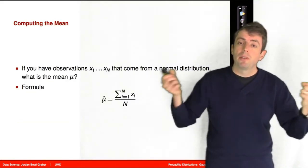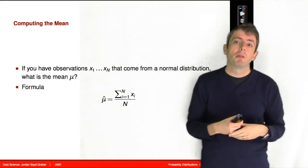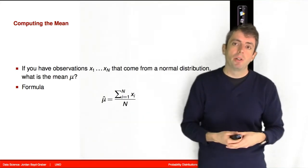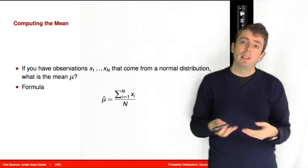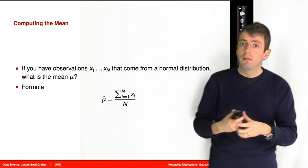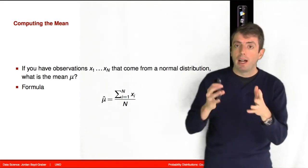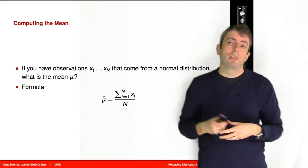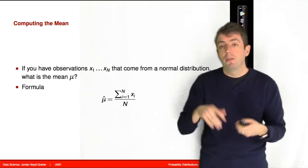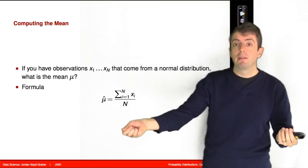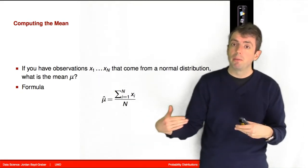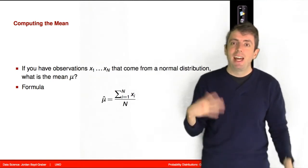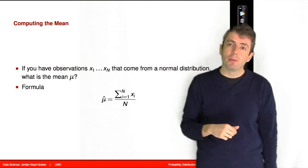If you have a bunch of observations and you believe they come from a normal distribution, how can you figure out what the mean of that distribution was? This is called estimation. We'll talk about this a little bit more later. But I wanted to give you this formula now so that you can use this to build intuitions about the normal distribution. If you have a bunch of observations that you believe come from a normal distribution and you want to figure out what the mean was, the obvious thing to do is to take them all together and average them. That turns out to be a good estimate of your mean.